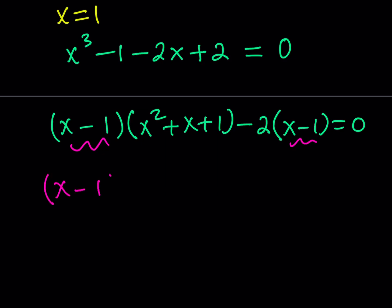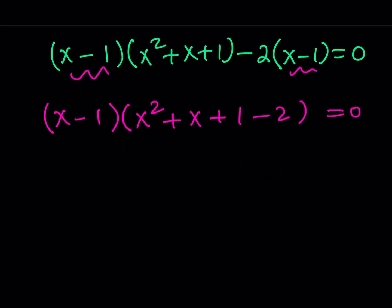If you take out x minus 1, then you should be getting x squared plus x plus 1 minus 2. This time I'm going to show my work so I can get full credit. That's what your teachers have been telling you. Show your work. Otherwise, you don't get credit. x minus 1 times x squared plus x minus 1 equals 0. This is where the golden flavor comes in. Isn't that beautiful?